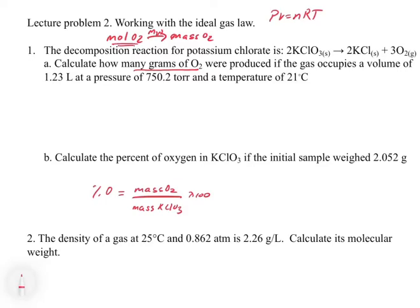Now let's set up the variable chart. The variable chart is where you take information from the problem and you set it up for each one of the various variables that are in PV equals nRT. And then you use this chart to get you to the correct units for the ideal gas law. So we have a volume of 1.23 liters. We can leave that as is. That's in the correct units.